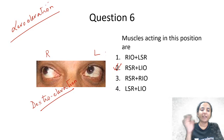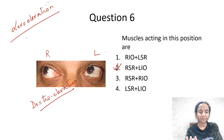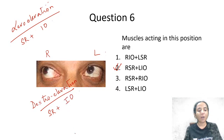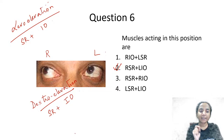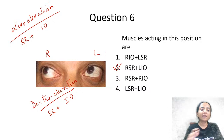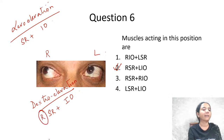Here is a simple way to arrive at the answer. Whenever you get a question on dextro or levo elevation, first write down the names of the elevator muscles — superior rectus and inferior oblique. Then follow this rule: the rectus muscle belongs to the side of the movement. Dextro elevation is a right-sided movement, so the rectus muscle is right superior rectus, and the other is left inferior oblique.